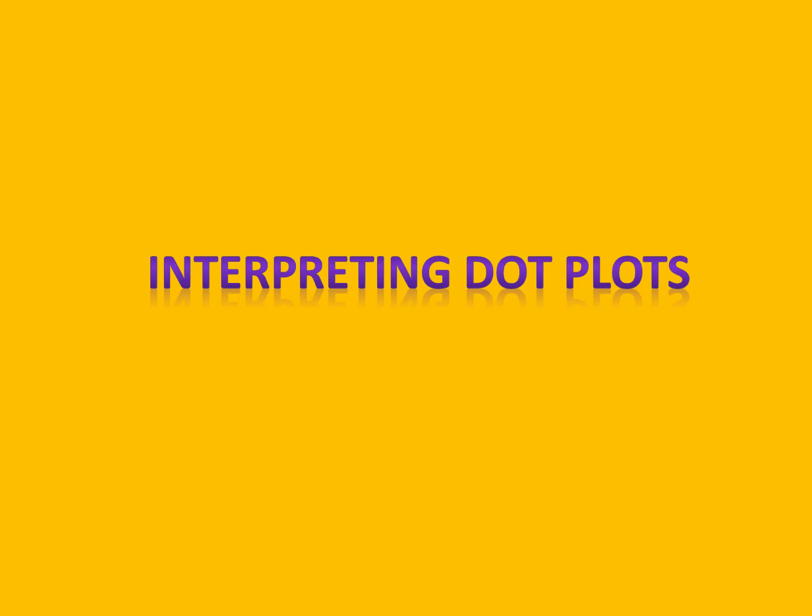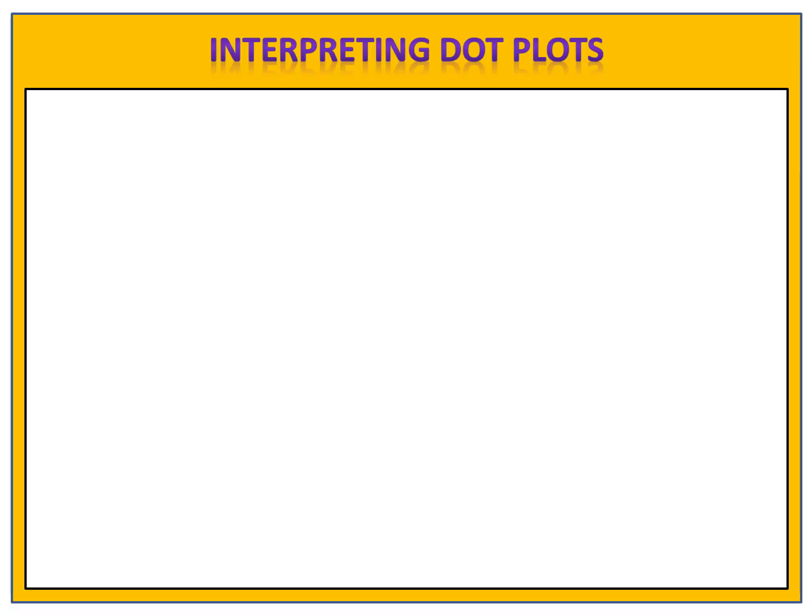In this lesson, we're going to learn how to interpret dot plots. What exactly is a dot plot? A dot plot is a statistical graph that displays data or information. This is easiest to understand by looking at an example.